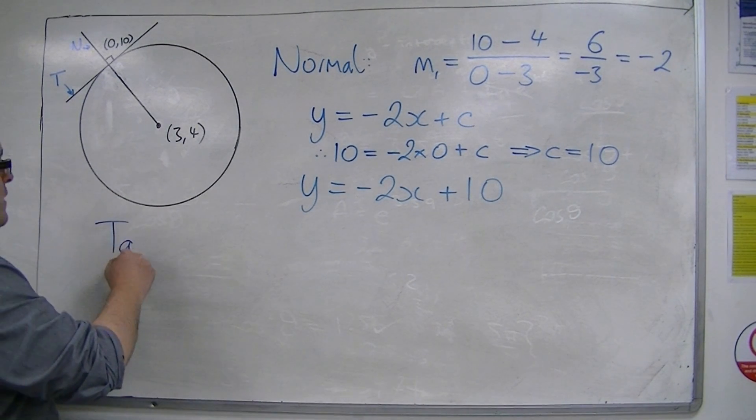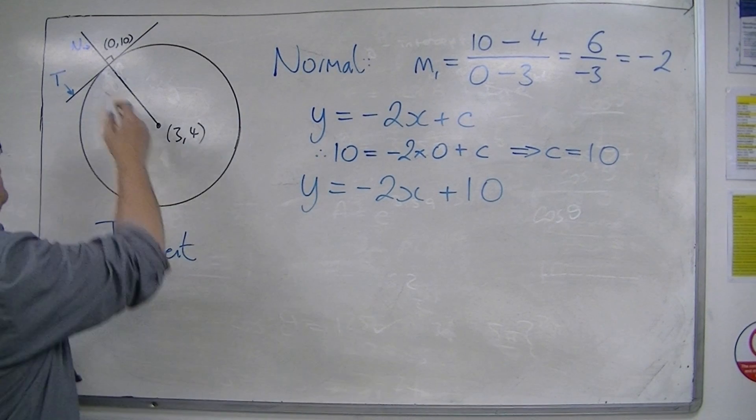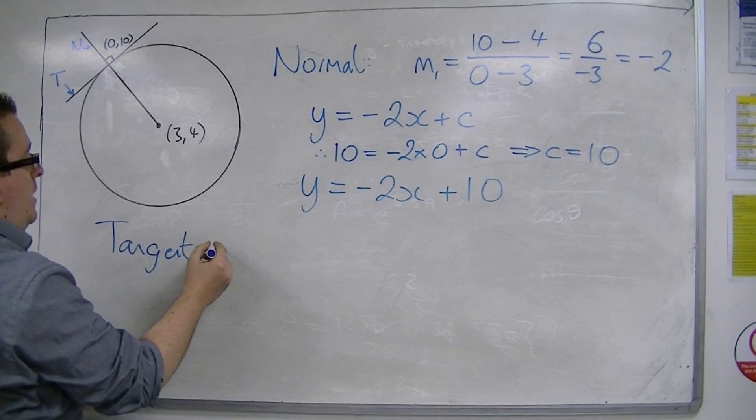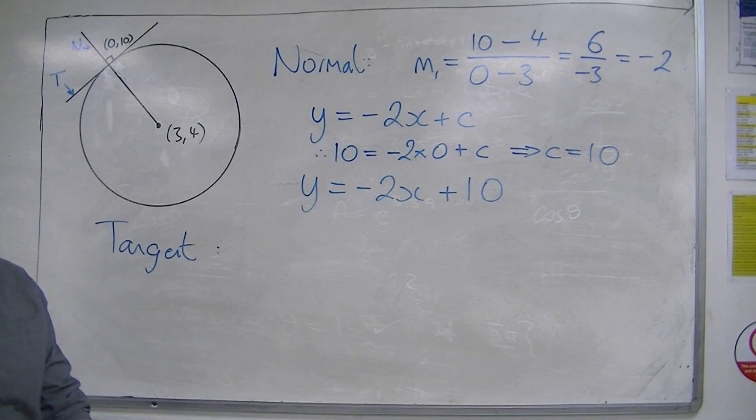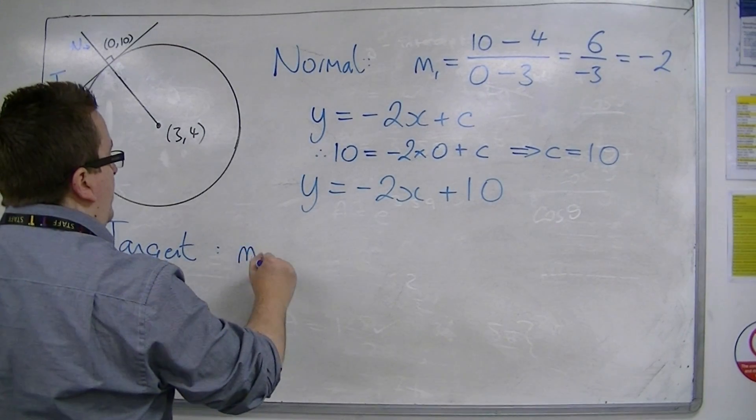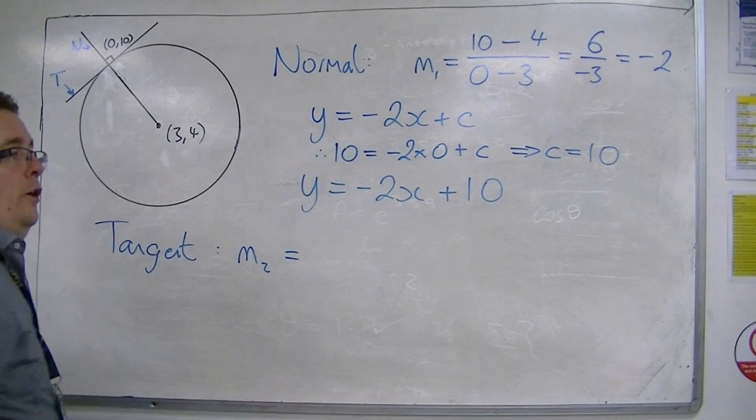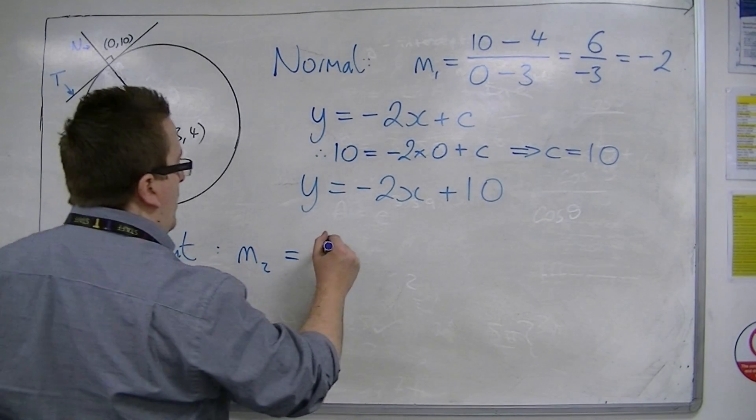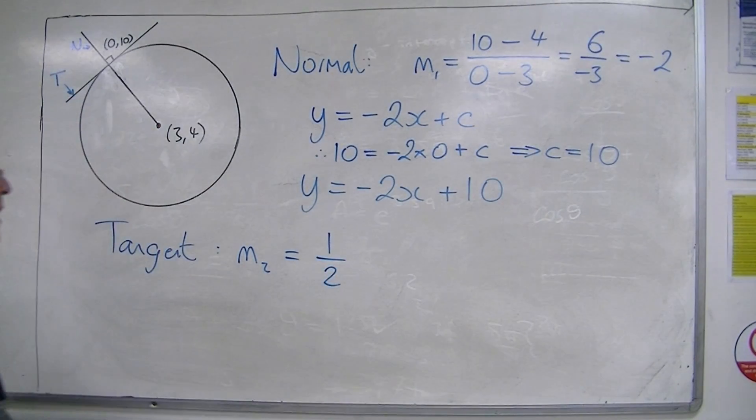Now, the equation of the tangent, this line, running perpendicular to it, will have a gradient that is the negative reciprocal of minus 2. So, that is 1 over 2. It's 1 half.